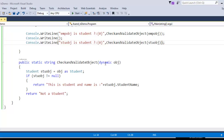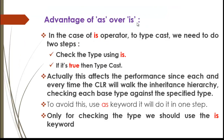Now let us see the advantage of 'as' over 'is'. In the case of the 'is' operator, to type cast we need two steps: first check the type using 'is', and if it is true, then type cast. This affects application performance because every time the CLR walks the inheritance hierarchy checking each base type against the specified type. To avoid this, use the 'as' keyword — it does this in a single step.